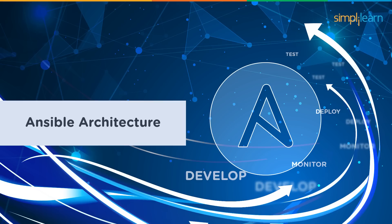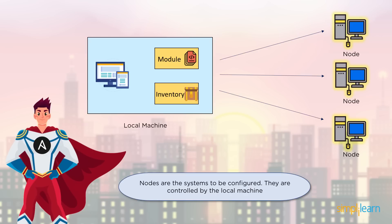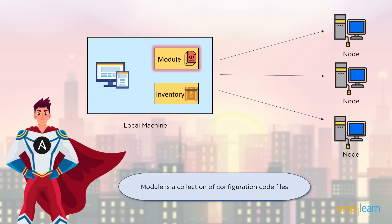Now that we know what exactly Ansible is, let's look at Ansible's architecture. Ansible has two main components: you have the local machine and you have your node or the client machine. The local machine is where the system administrator sits — he or she installs Ansible here. On the other end, you have your node or the client systems. In the case of Ansible, there's no supporting software installed on the client — these are just the systems that require to be configured, and they are completely controlled by the local machine.